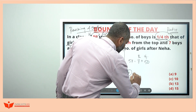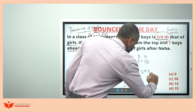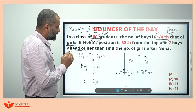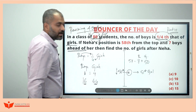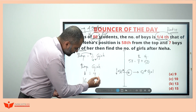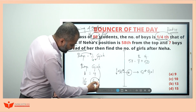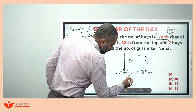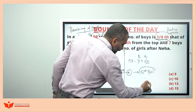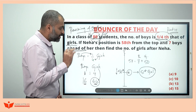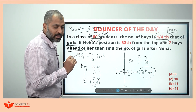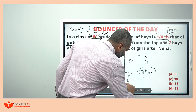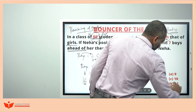Neha will be the fifty-first girl. Find the number of girls after Neha. Totally sixty-four girls are there. When I start counting from the top — one, two, three, four — up to and including Neha, fifty-one girls are there. Out of sixty-four, the remaining number of girls after Neha is thirteen. So the answer is thirteen.